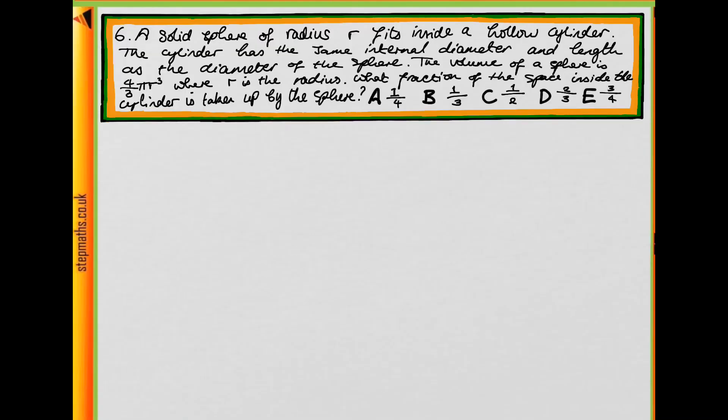This is question 6 of the Natural Sciences Admissions Assessment specimen paper. In this question we have a solid sphere of radius r which fits inside a hollow cylinder. The cylinder has the same internal diameter and length as the diameter of the sphere.